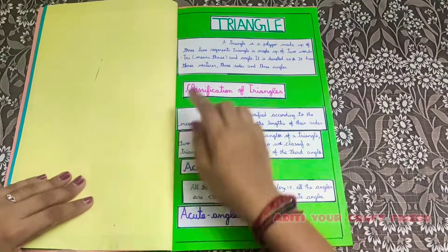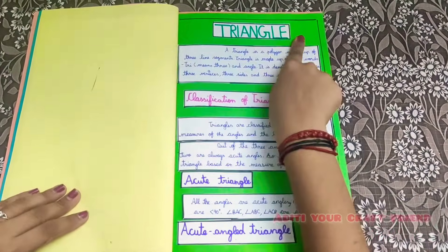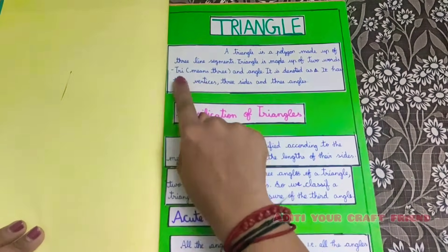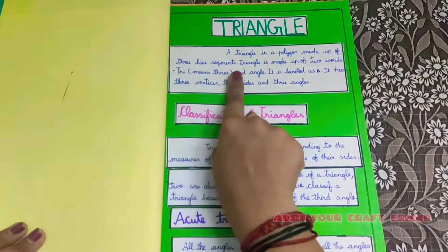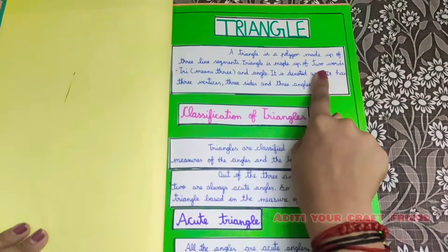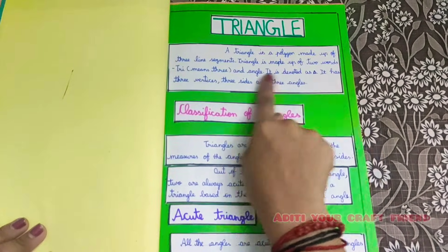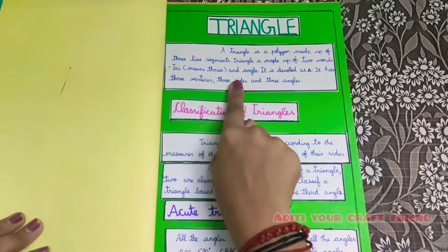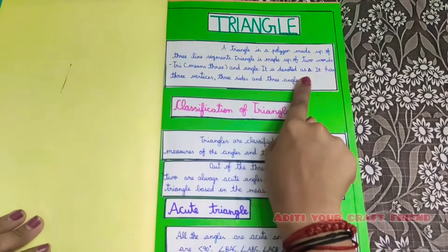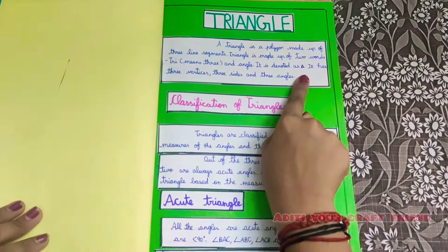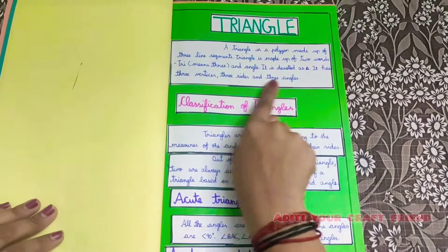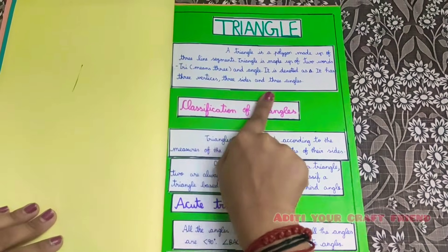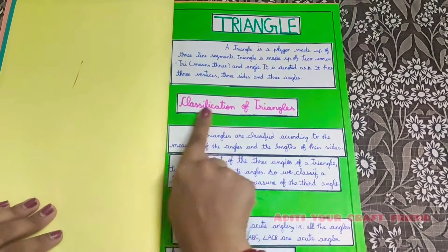Now let's see about triangles. A triangle is a polygon made up of three line segments. Triangle is made up of two words: 'tri' means three, and 'angle'. It has three vertices, three sides, and three angles.